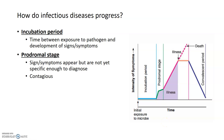As soon as you start to show any type of sign or symptom, you enter the prodromal stage, shown in green on the graph. A sign of disease is something objective that you can measure, like a fever. A symptom is anything subjective, like losing your appetite or feeling tired. Signs and symptoms start to appear in the prodromal stage, but most of the time they're not specific enough to diagnose. However, you do start to become contagious — able to pass that disease to other people.